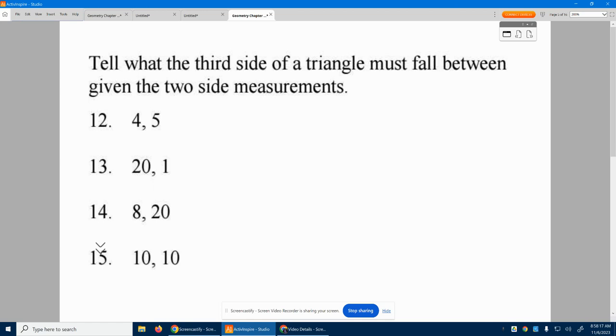12 through 15, it says, tell what the third side of a triangle must fall between, given the two side measurements. They gave us four and five.